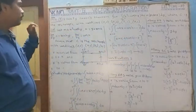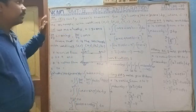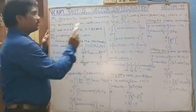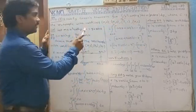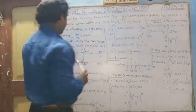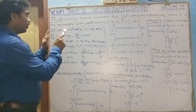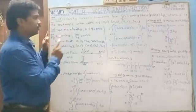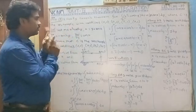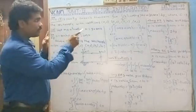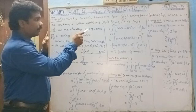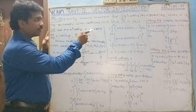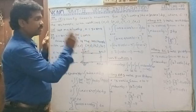This is the integral over C of M dx plus N dy. Let M equal x squared minus cosh(y), and N equal y plus sin(x). First, we find ∂M/∂y: x squared differentiates to 0, cosh(y) differentiates to sinh(y), so ∂M/∂y equals minus sinh(y). And ∂N/∂x: y differentiates to 0, and sin(x) differentiates to cos(x).